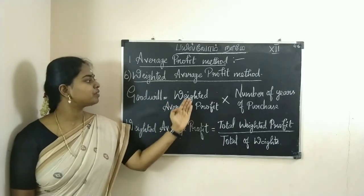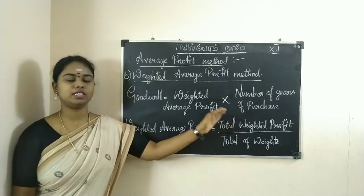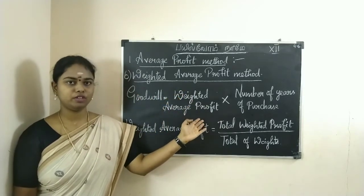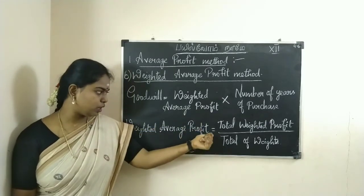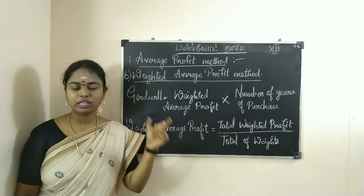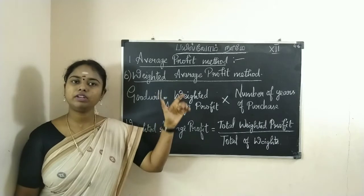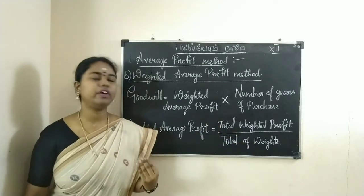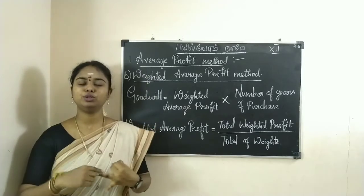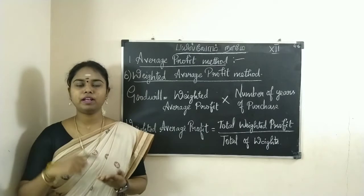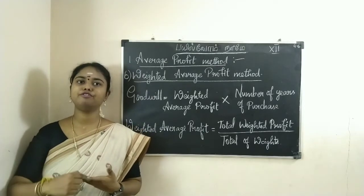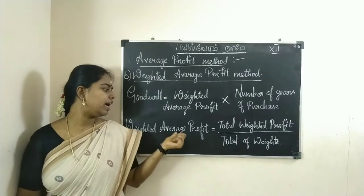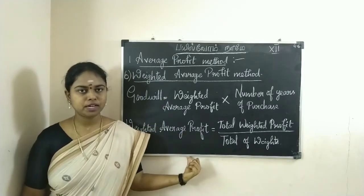Goodwill is equal to Weighted Average Profit multiplied by Number of Years of Purchase. Weighted Average Profit equals Total Weighted Profit divided by Total of Weights. We need to multiply the profits by the weights to get Weighted Profit, then divide by Total of Weights. So we add all the weights: 1 plus 2, 2 plus 3, 3 plus 4, 4 plus 5 — that total is the denominator. This is the Goodwill Evaluation method.